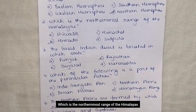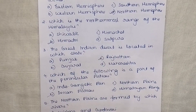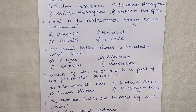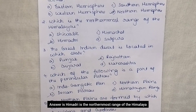Which is the nethermost range of the Himalayas? The options are Sivalik, Himachal, Himadri, and Satpura. Answer is Himadri is the nethermost range of the Himalayas.